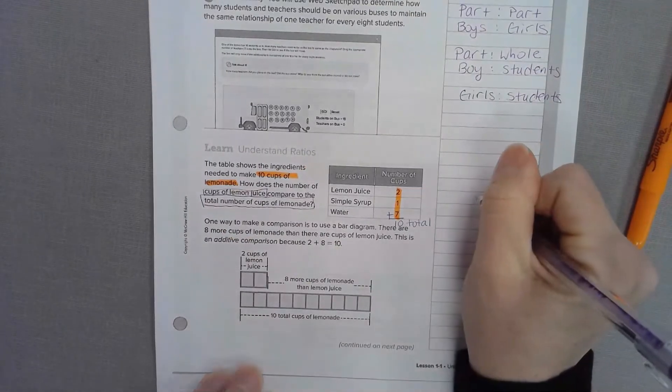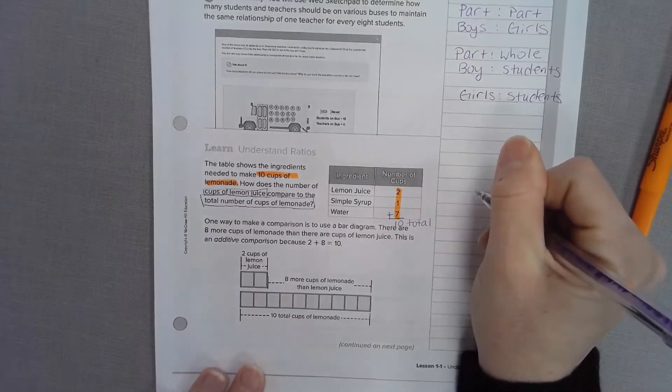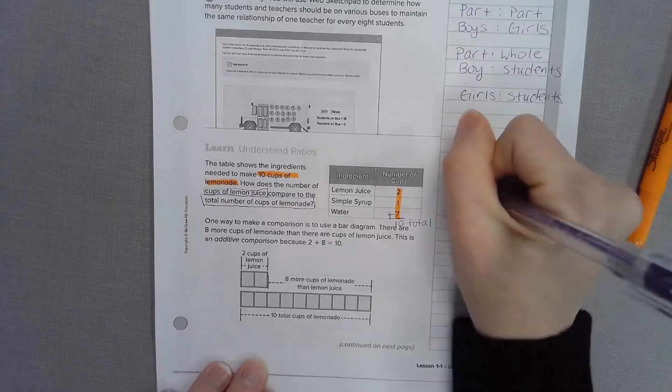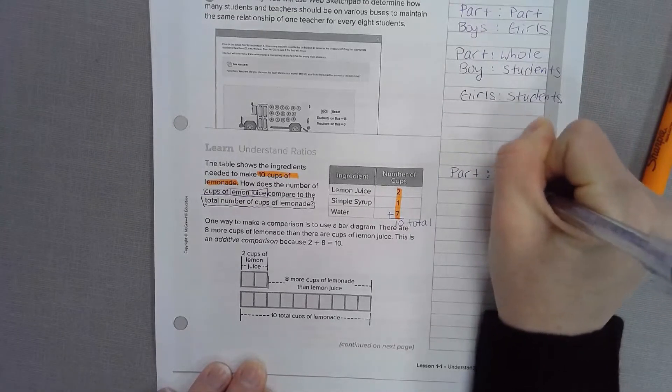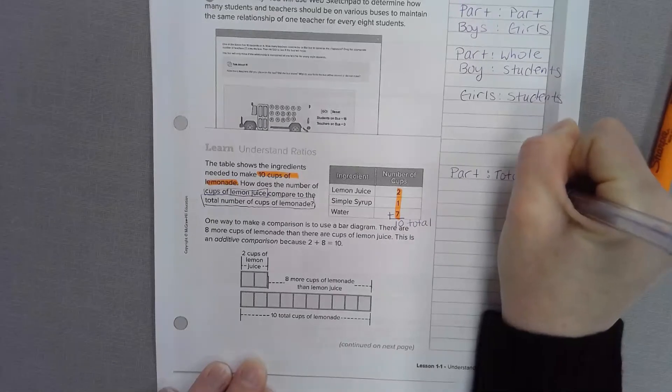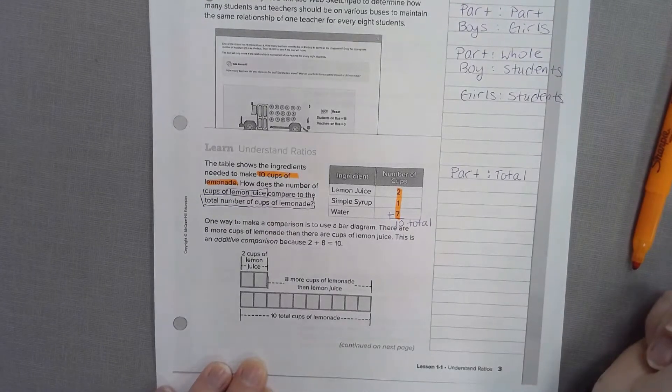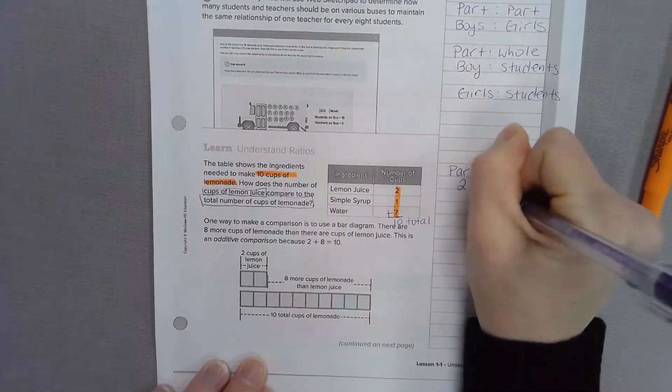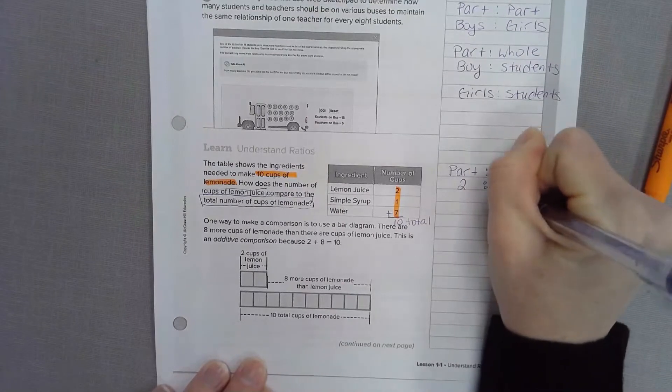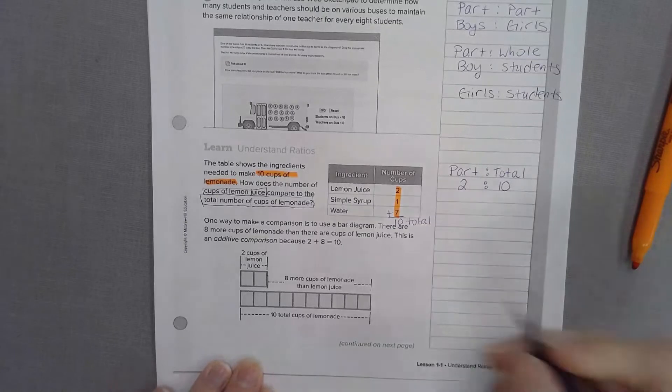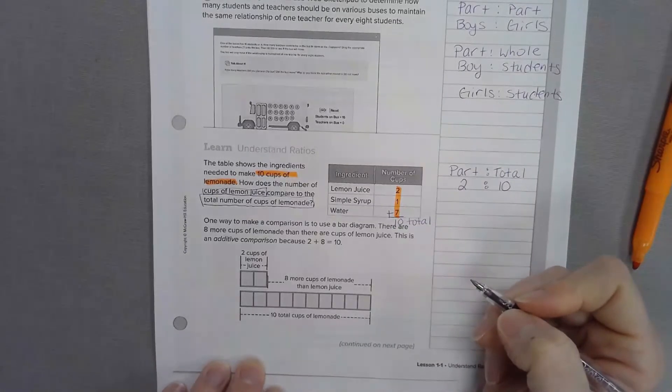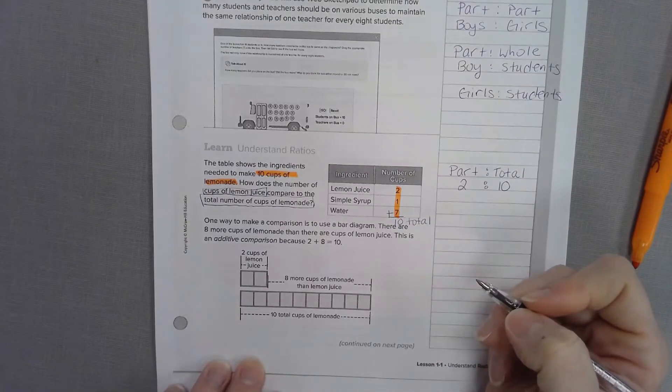Off to the side, let's write that comparison. It's comparing a part to a total. In our table it says you need 2 cups of lemon juice to 10 total cups. What this means is for every 2 cups of lemon juice there is 10 total cups of ingredients.